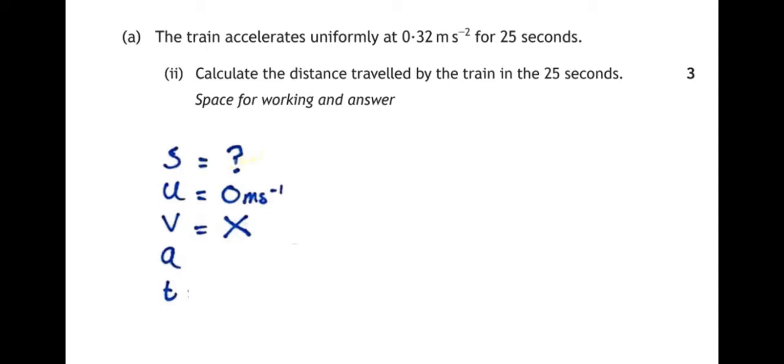A is the acceleration of the train, 0.32 meters per second per second. And T is the time given, which is 25 seconds.